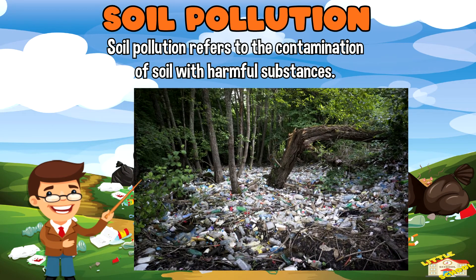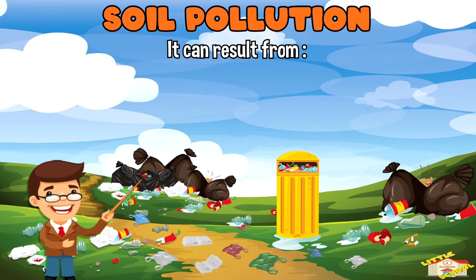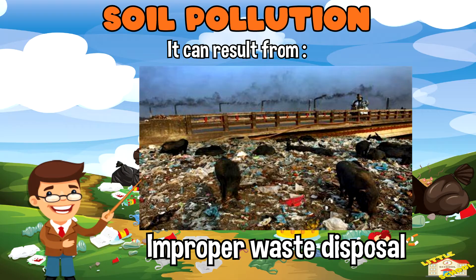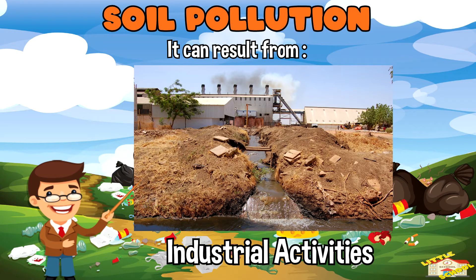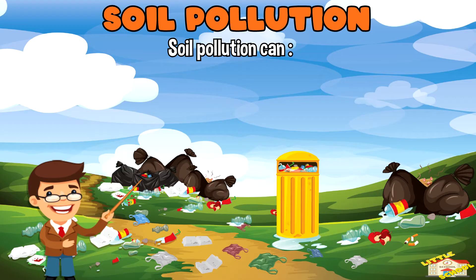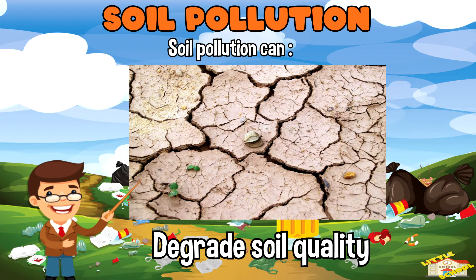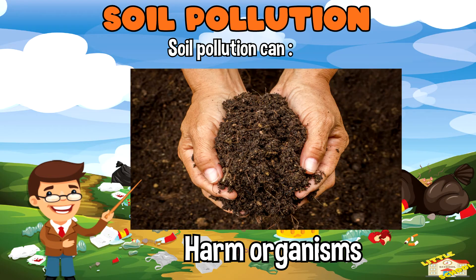Soil pollution refers to the contamination of soil with harmful substances. It can result from improper waste disposal, use of pesticides and fertilizers, industrial activities, and mining. Soil pollution can degrade soil quality, affect plant growth, and harm organisms that rely on the soil ecosystem.